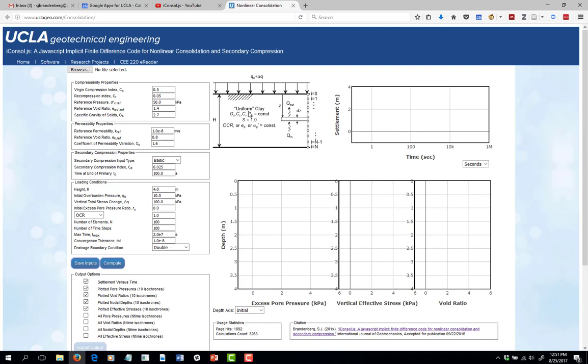It shows a figure from the paper that has the uniform clay deposit, specific gravity C sub C, C sub R, and C alpha are constant, 100% degree of saturation, and then we have either the OCR, the void ratio, or the maximum past pressure being constant there.